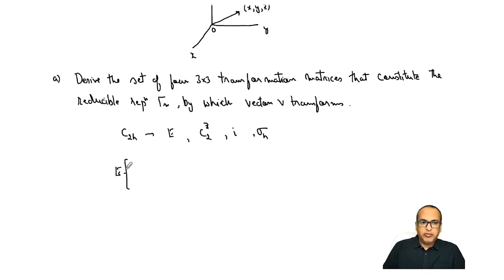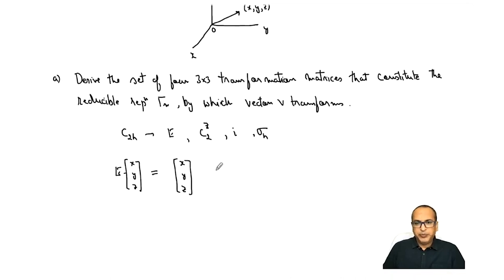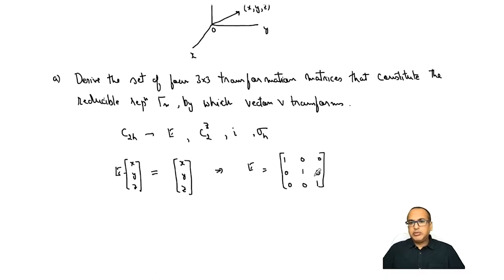For E: the vector v can be written as a column matrix (x, y, z), where x, y, z are the coordinates of the tip. E does not do anything, so x, y, z remain as x, y, z. This means E is a unit matrix of order 3: [1 0 0 / 0 1 0 / 0 0 1].